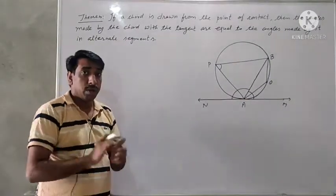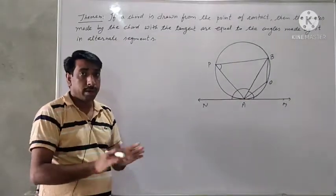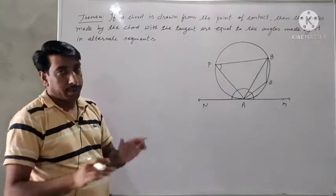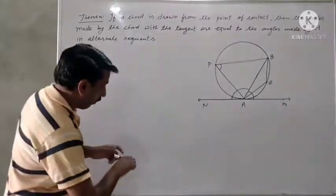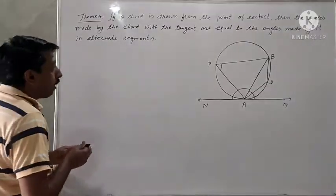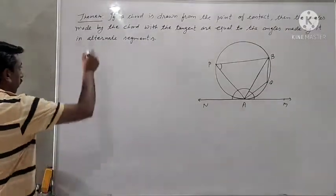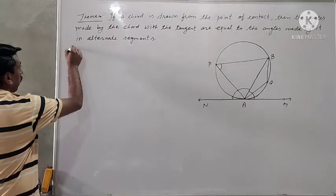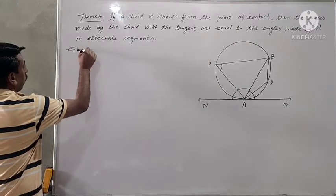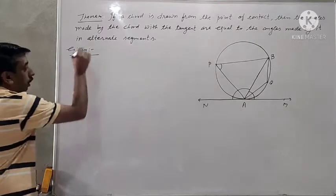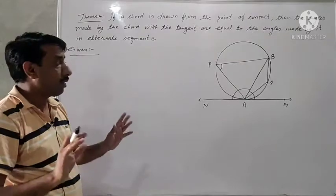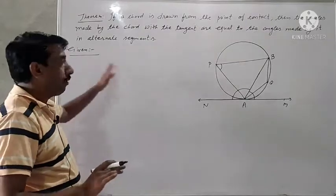Now we have understood the statement. How will we prove it? Look here. First of all, we will write the given information in the theorem — what things we will write here.